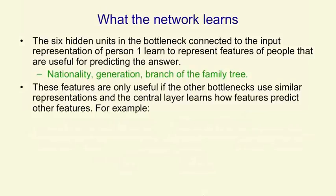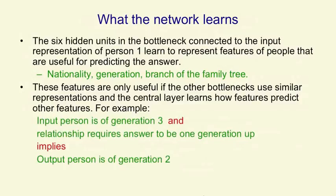Of course, those features are only useful if the other bottlenecks — the one for relationships and the one near the top of the network before the output person — use similar representations. The central layer is able to say how the features of the input person and the features of the relationship predict the features of the output person. For example, if the input person is of generation three and the relationship requires the output person to be one generation up, then the output person is of generation two. But to capture that rule, you have to extract appropriate features at the first and last hidden layers, and make the units in the middle relate those features correctly.